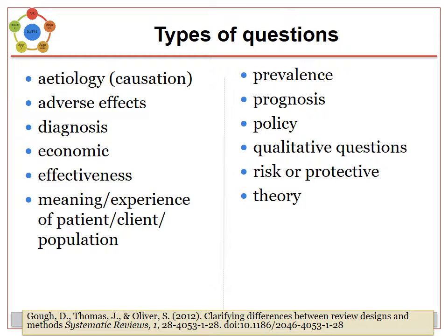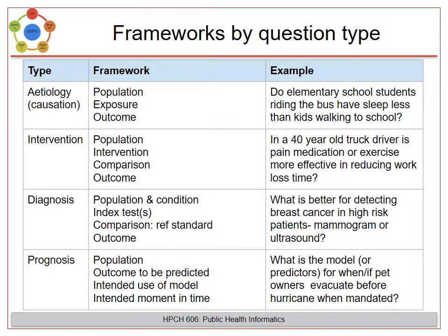So far we have been focusing on intervention questions, asking what works best. But there are many types of questions in public health: what causes or leads to a health issue, what is the best way to diagnose or screen, what is the prevalence of a disease, or what is the experience of a patient or population? For different questions, there are different frameworks. The point of these frameworks is to guide the specificity of the question, making it easier when you move on to finding the evidence. Notice that all of these frameworks require adding in the population — this is important as it helps make the question specific to which population the evidence will apply to. Outcome is also used in all of them, as we need something measurable and easy to compare.